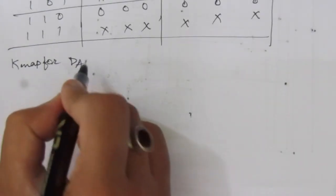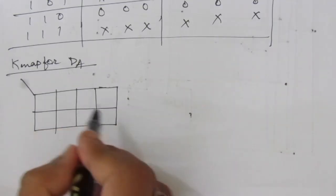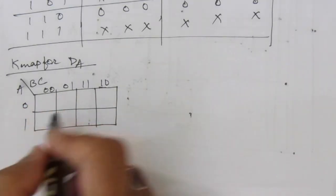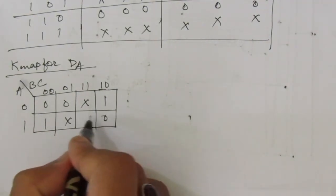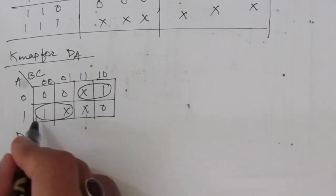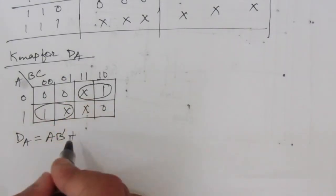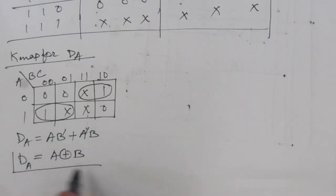For the K-map for DA, we will have a 3-variable map with variables A, B, and C. Placing the DA values into the map: 0, 0, 1, don't care, 0, 0, 1, don't care in the first row, and 1, don't care, 0, don't care, 1, don't care, 0, don't care in the second row. Combining the groups, this term gives A·B̄, and this combination gives Ā·B. So we can write DA = A XOR B.